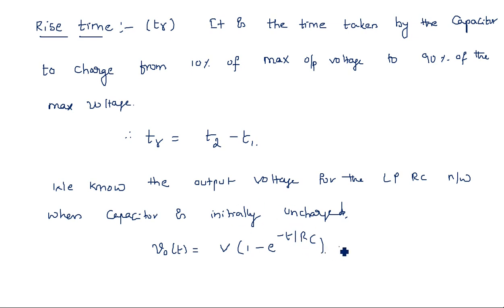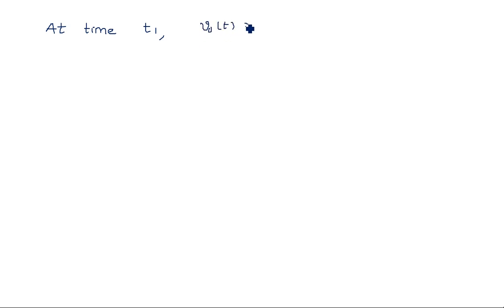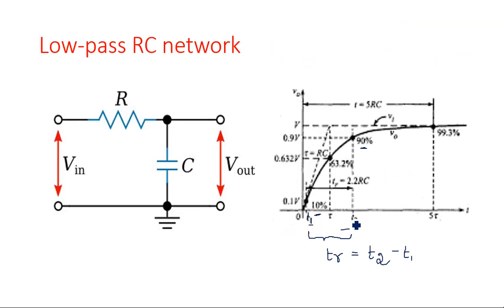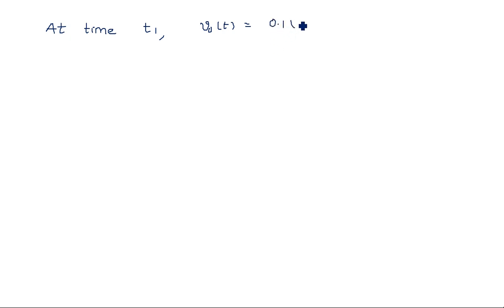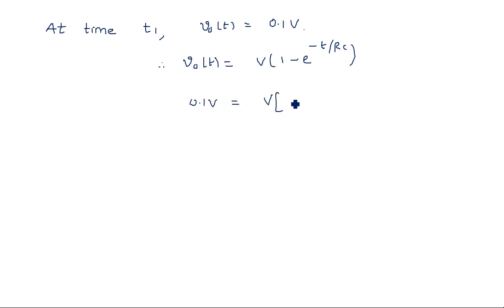At time T1, what is the output voltage? At T1 we have 10% of the maximum voltage. Maximum voltage is V, so 10% means 0.1V. Therefore V0(t) = 0.1V. Substituting into equation 1: 0.1V = V × (1 − e^(−T1/RC)).